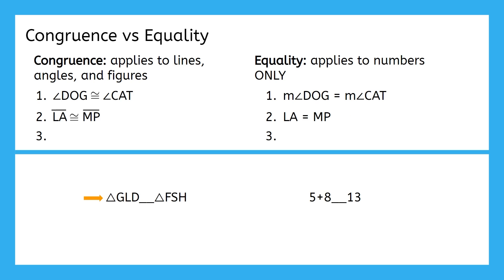How about triangle GLD and triangle FSH? This is talking about the whole triangle, so this is congruence. And lastly, we have 5 plus 8 and 13. Those are all numbers, so we are talking about equality.